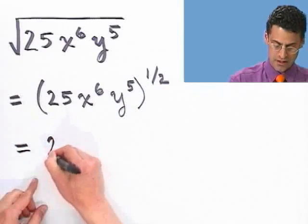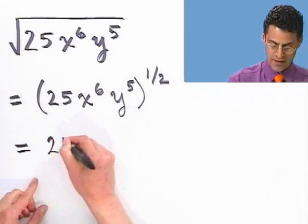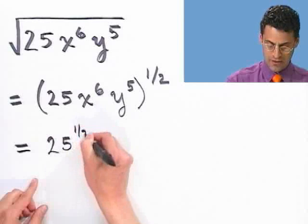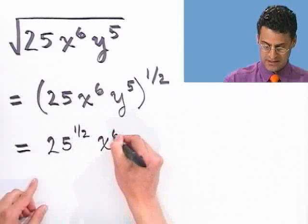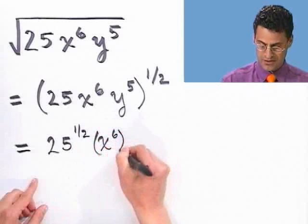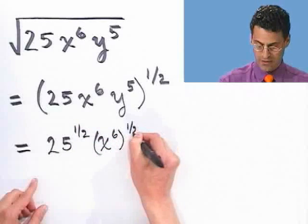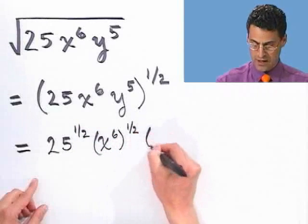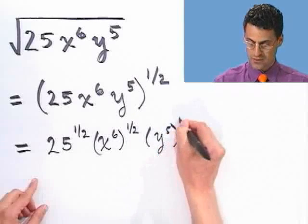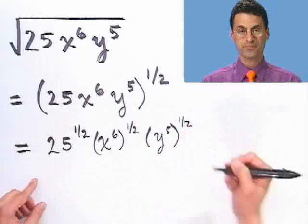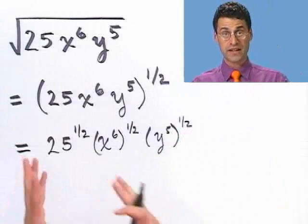So this is the same as 25 to the one-half power, times x to the sixth all to the one-half power, times y to the fifth all to the one-half power. Now I can think about each of these individually.